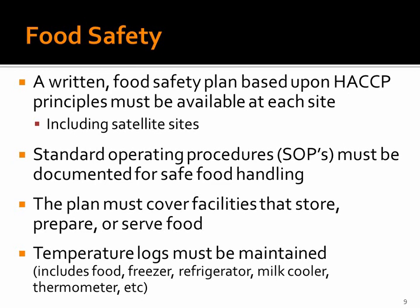One food safety plan may be written for the entire district; however, each site must have the plan available. This includes satellite sites — for example, a school where they do not cook, only serve. Your reviewer will evaluate freezers, refrigerators, dry goods storage rooms, and other areas to ensure purchased and USDA foods are properly stored and maintained. Therefore, temperature logs must be maintained. The reviewer will also observe whether proper HACCP principles are followed: are good personal hygiene habits practiced? Is cross-contamination of food prevented? Do staff monitor food temperatures? Are refrigerator and freezer temperatures monitored? Are food preparation and service areas cleaned? Are utensils and equipment cleaned and in good working condition? Does there appear to be evidence of pests?